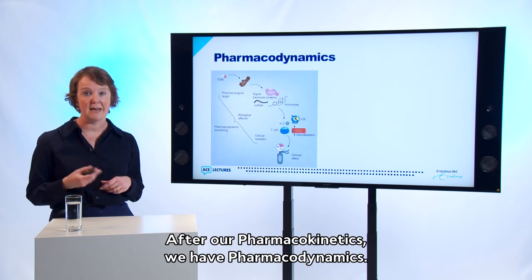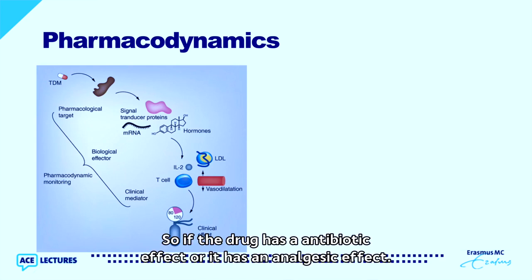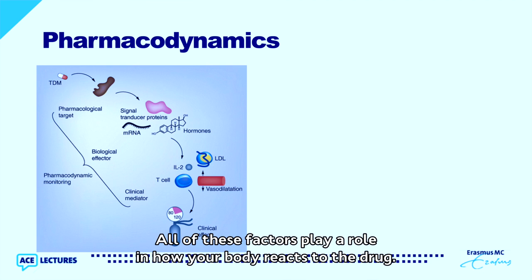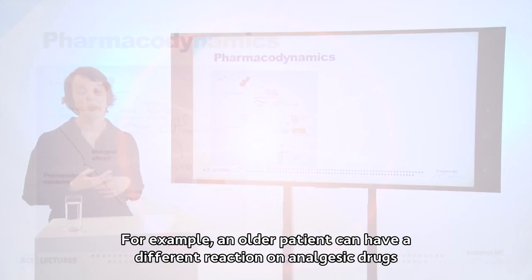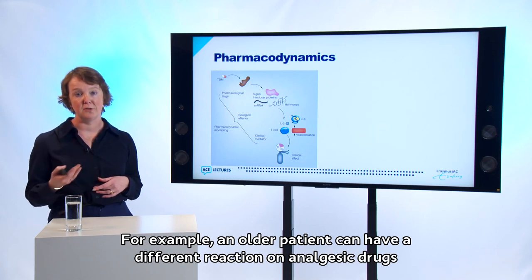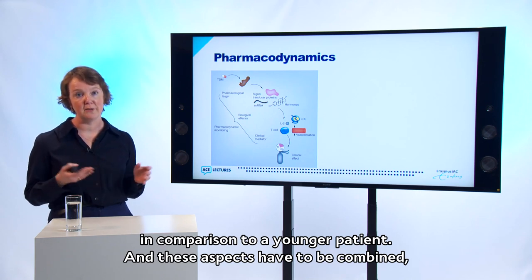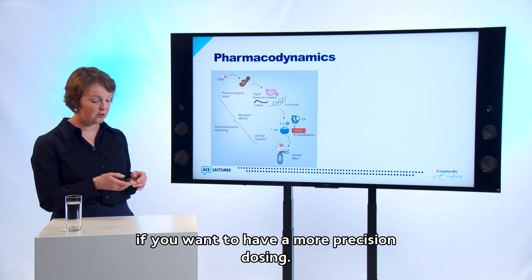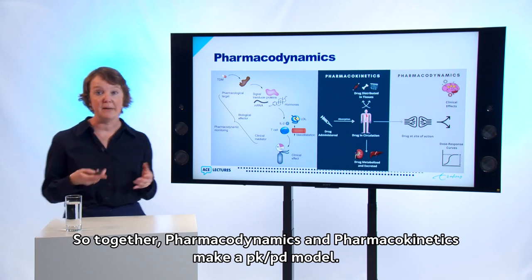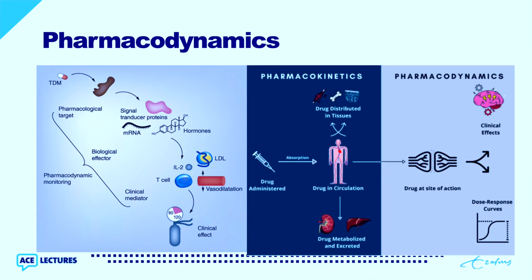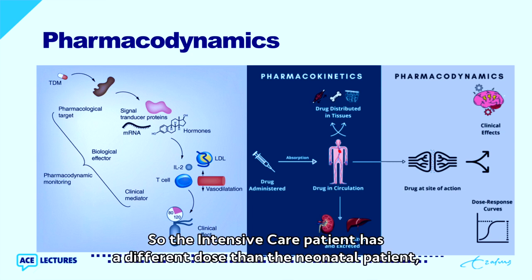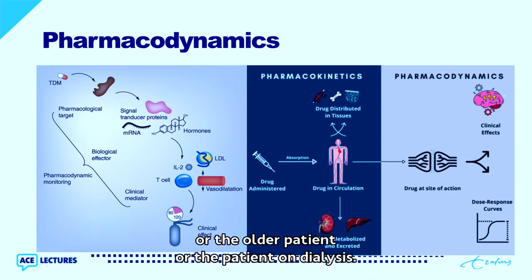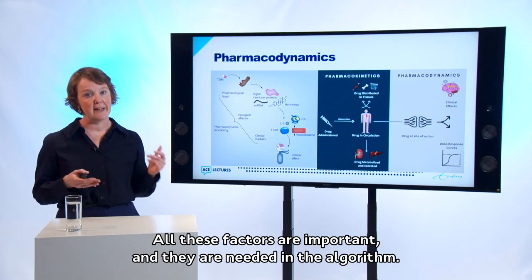After pharmacokinetics, we have pharmacodynamics — what the drug does to the body. Whether the drug has an antibiotic effect or an analgesic effect, all these factors play a role in how your body reacts to the drug. For example, an older patient can have a different reaction to analgesic drugs compared to a younger patient. Together, pharmacodynamics and pharmacokinetics make a PKPD model, and these factors can produce a dosing algorithm used in clinical practice to give the best dose for all patients — ICU, neonatal, elderly, or dialysis patients.